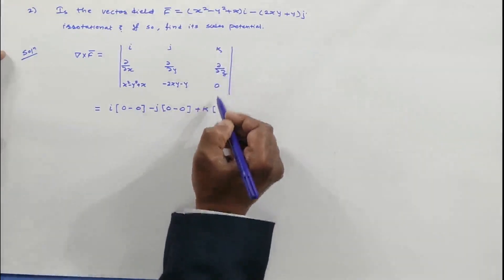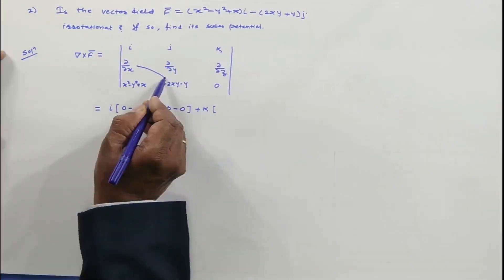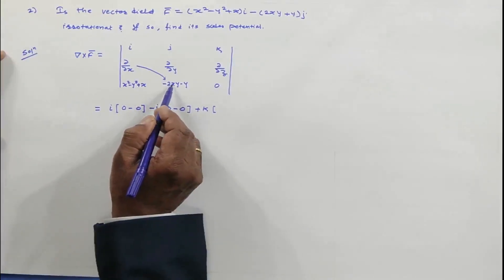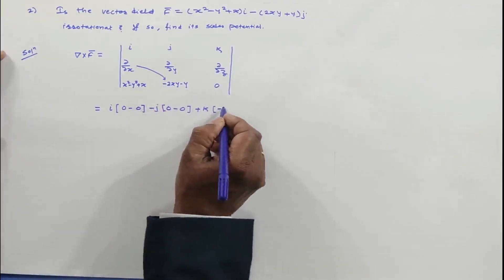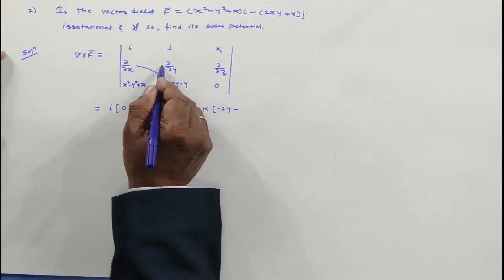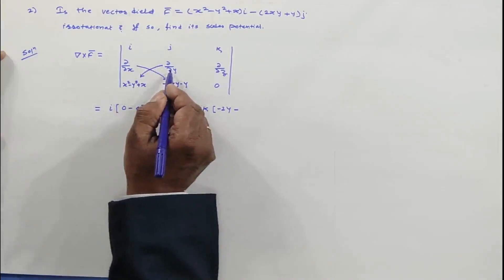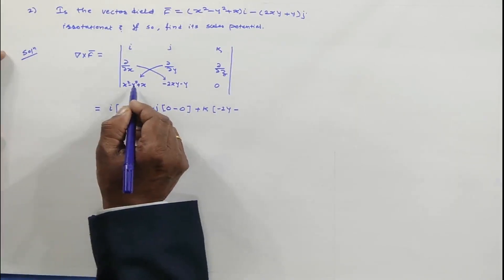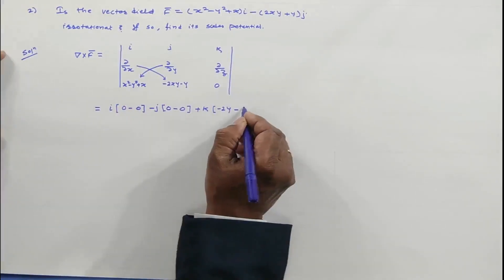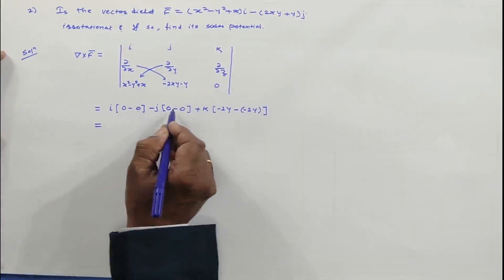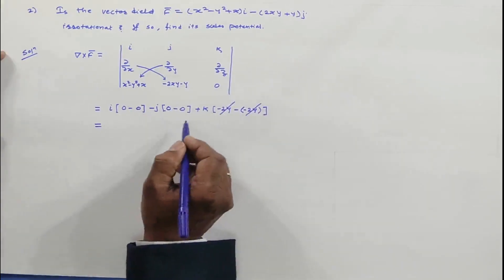For the k component, we leave that column and row. The derivative of (-2xy + y) with respect to x, keeping y and z constant, is -2y. The derivative of (x² - y² + x) with respect to y, keeping x and z constant: x² is constant, -y² differentiates to -2y, and x differentiates to 0. So the k component gives -2y - (-2y) = 0.